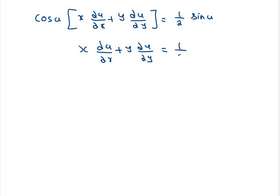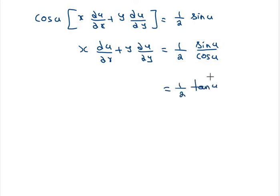Taking cos u common, we get x ∂u/∂x plus y ∂u/∂y equals (1/2) sin u divided by cos u, which equals (1/2) tan u. That is the required answer. Thank you.